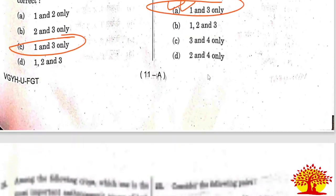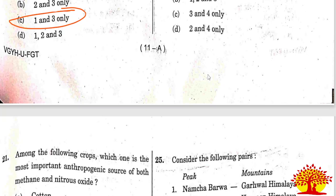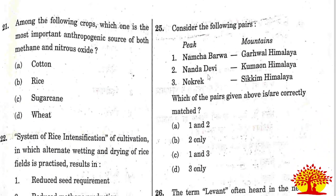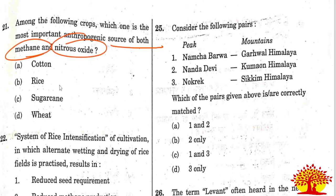Questions 21 and 22 are related to agriculture. Twenty-first question: among the following crops, which one is the most anthropogenic source of both methane and nitrous oxide? Option B, rice, is the correct answer. Rice paddies are considered one of the most important sources of methane and nitrous oxide.